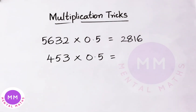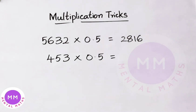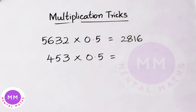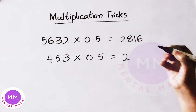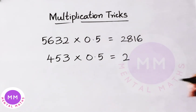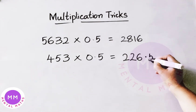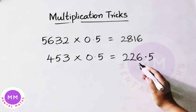See next one: 453 multiplied by 0.5. Here this number is an odd number. So what we have to do is, take the number before 453, that is 452. Write half of that value: 4 half is 2, 52 half is 26. At last write 0.5. So 453 multiplied by 0.5, the answer is 226.5.